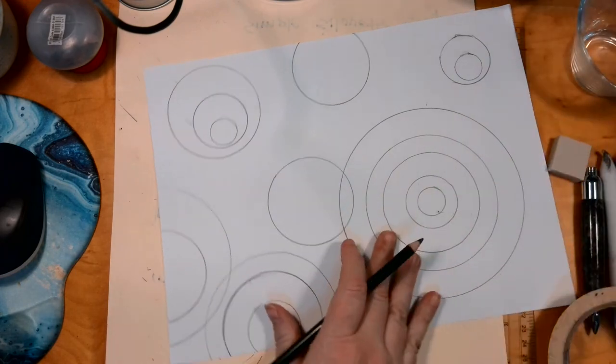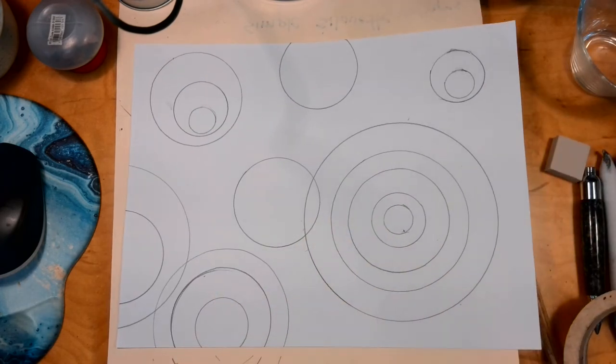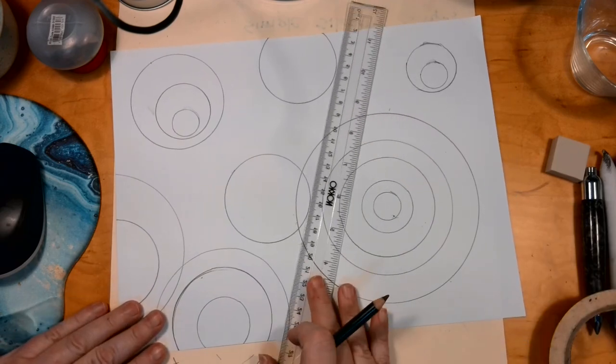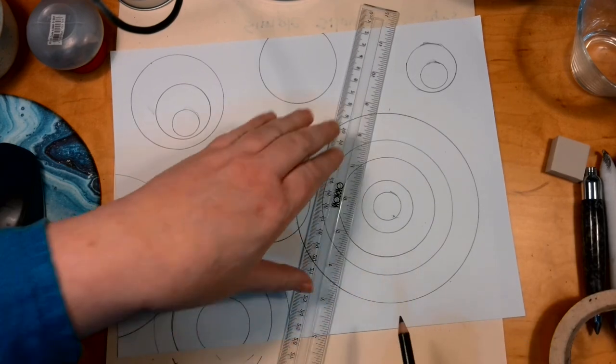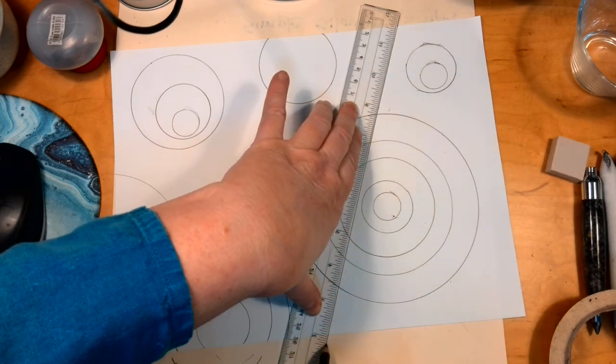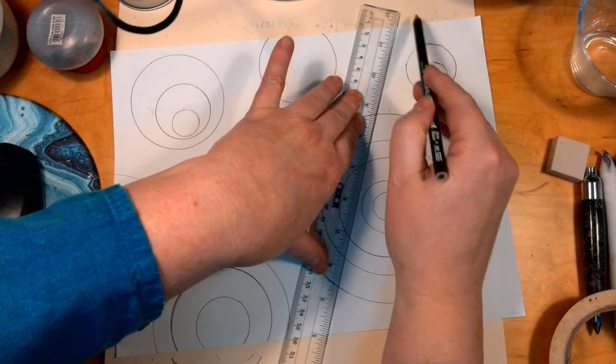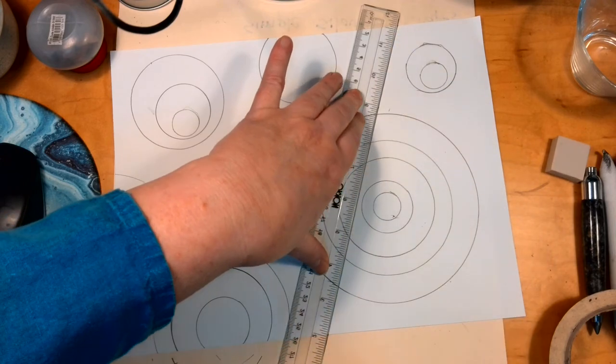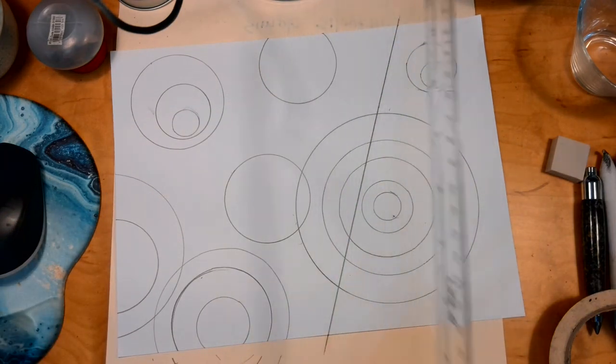Now I want you to take your ruler, and I want you to pull one line that goes all the way through, from one edge to the other. Remember when we use our ruler, we're holding in the middle, we start off the page, we pull on, we pull off at the bottom.